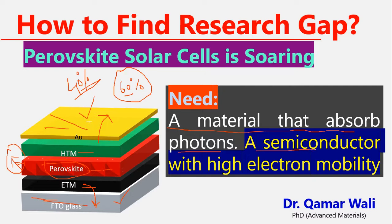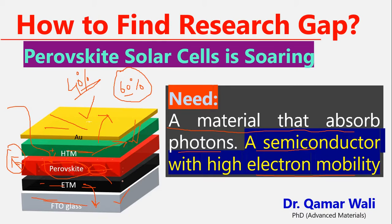We also need a semiconductor with high electron mobility. Mobility means how fast the transport layers collect electrons and holes from the perovskite, because when light shines on the material, electron-hole pairs are created. We need to read the literature to understand what materials are currently being used.